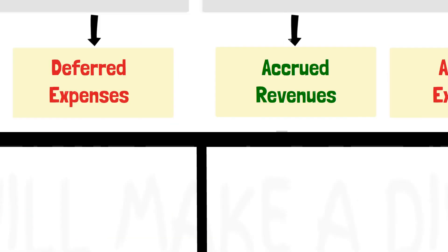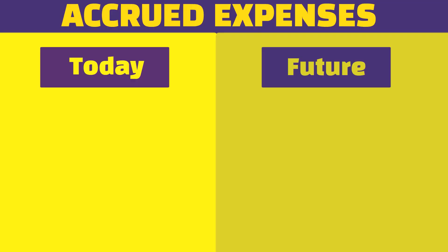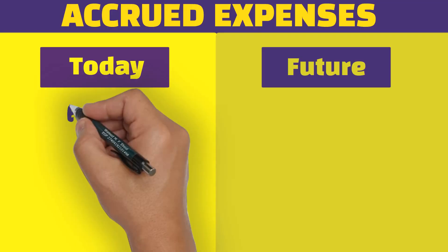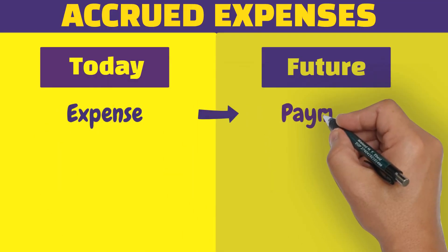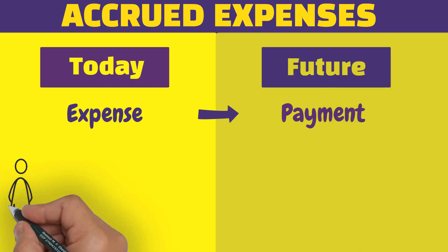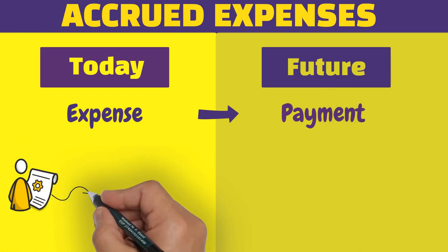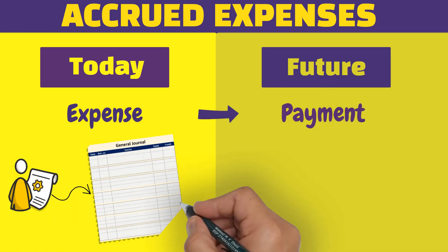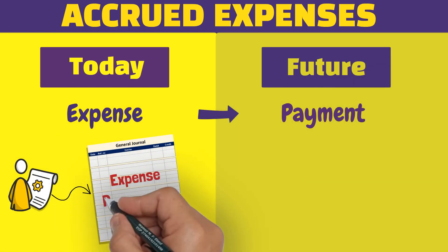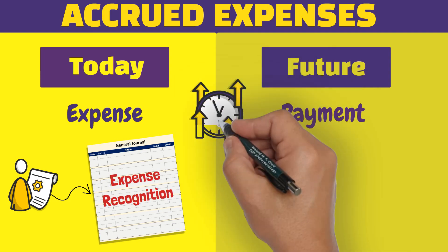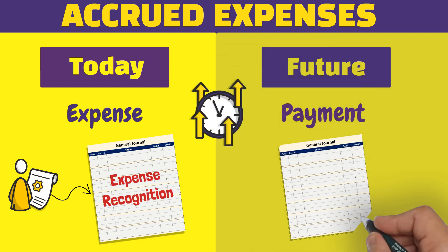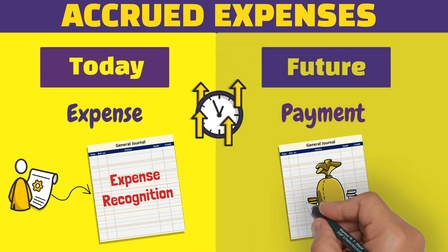We have an accrued expense when a company incurs an expense before the payment for this expense is made. The incurred expense is recorded first, then the cash payment for that expense is recorded later when it is paid.